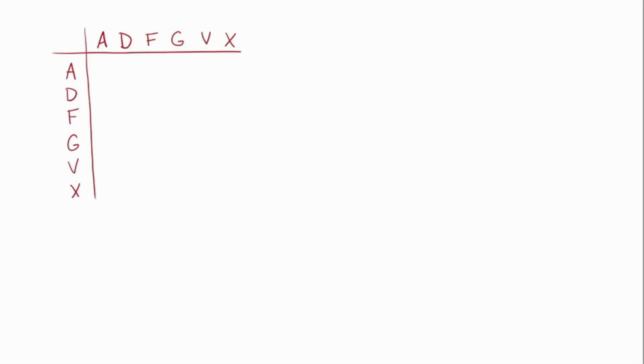The first special tool which is used in setting up the cipher is called a Polybius square. It's this table. I've labeled the columns and rows by the letters ADFGVX. Those are chosen because they're distinct in Morse code. They're hard to mix up in Morse code.